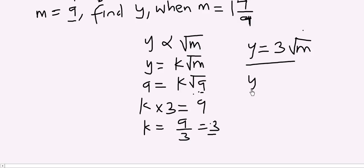So we can write that y equals 3 for the second question. y equals 3 root m. m is 1 and 7 over 9. What is 1 and 7 over 9?